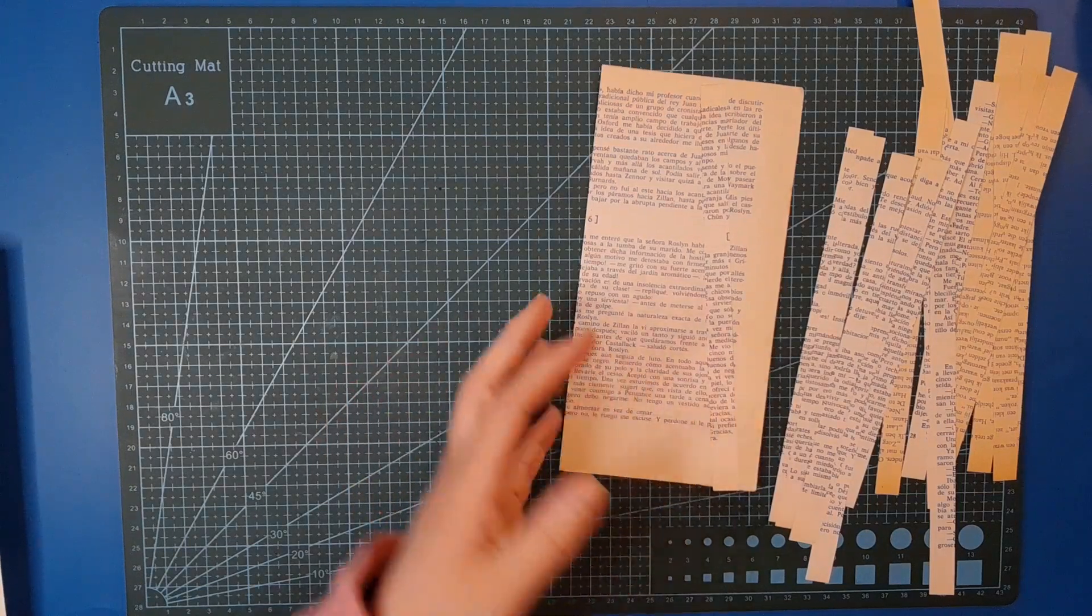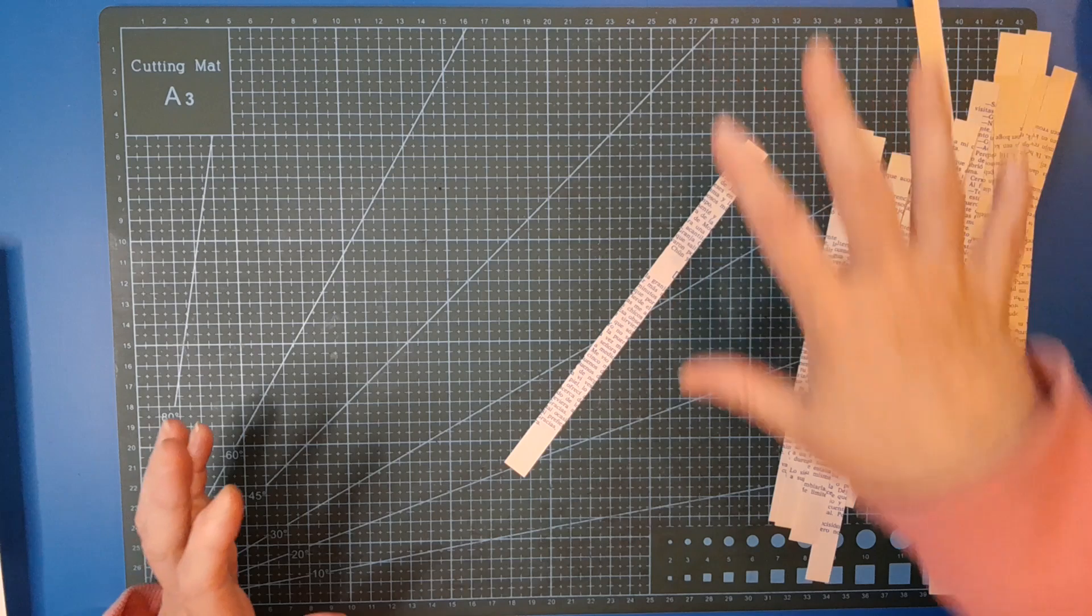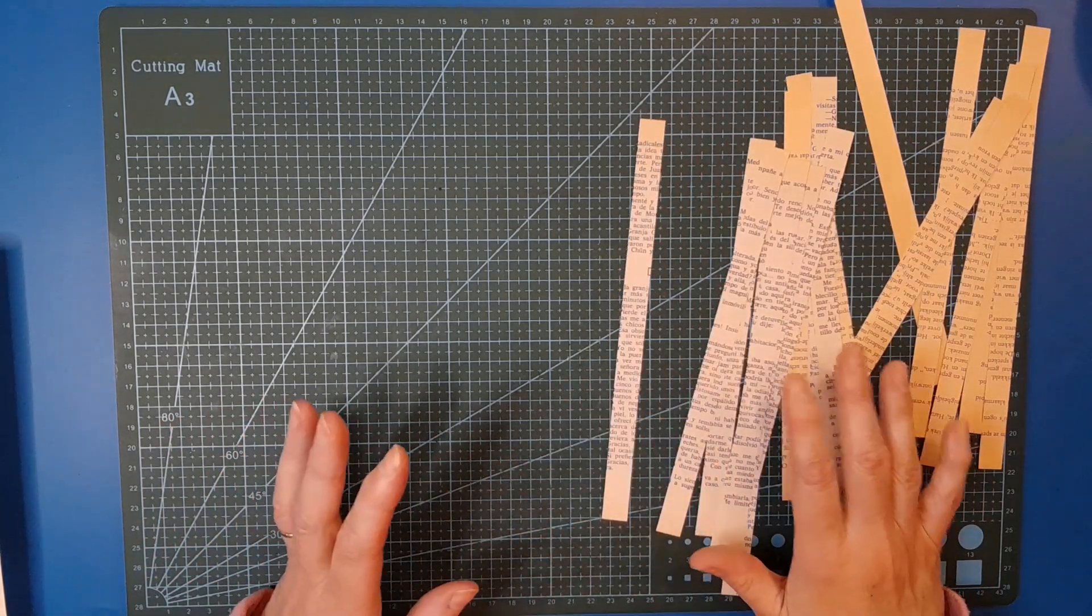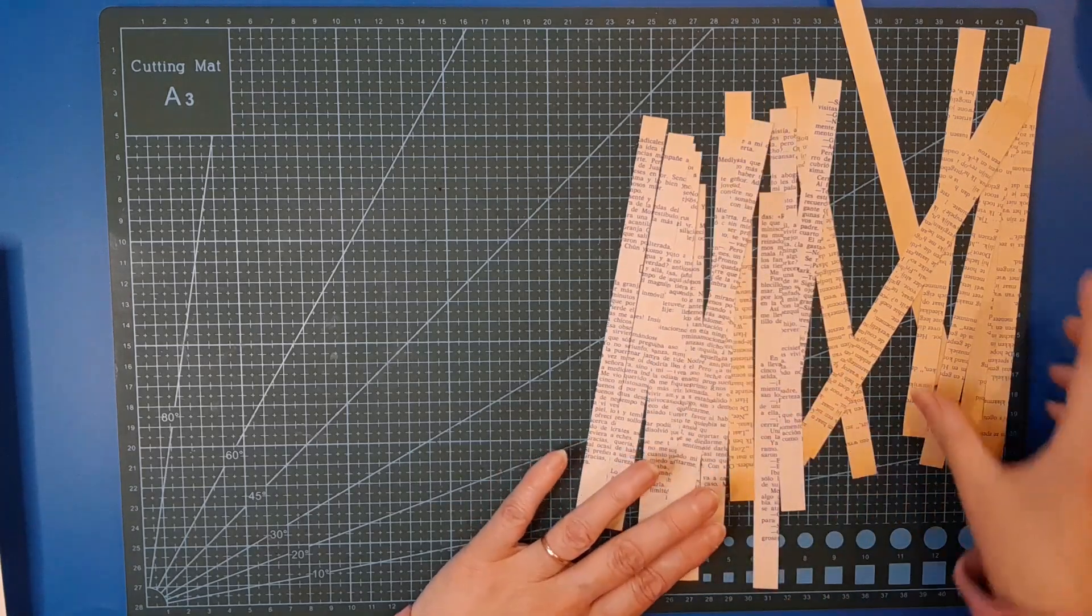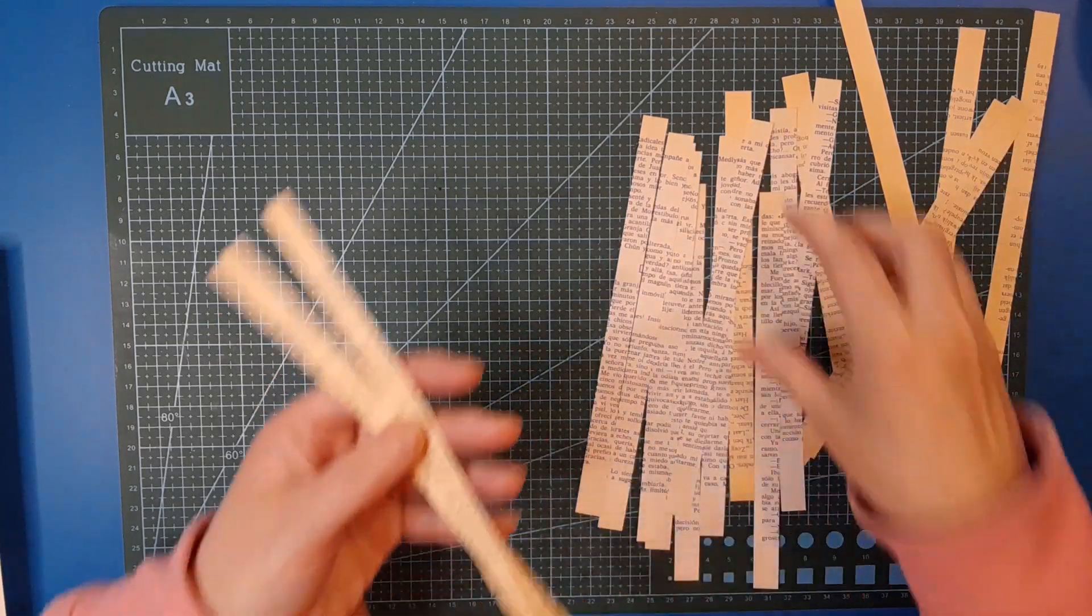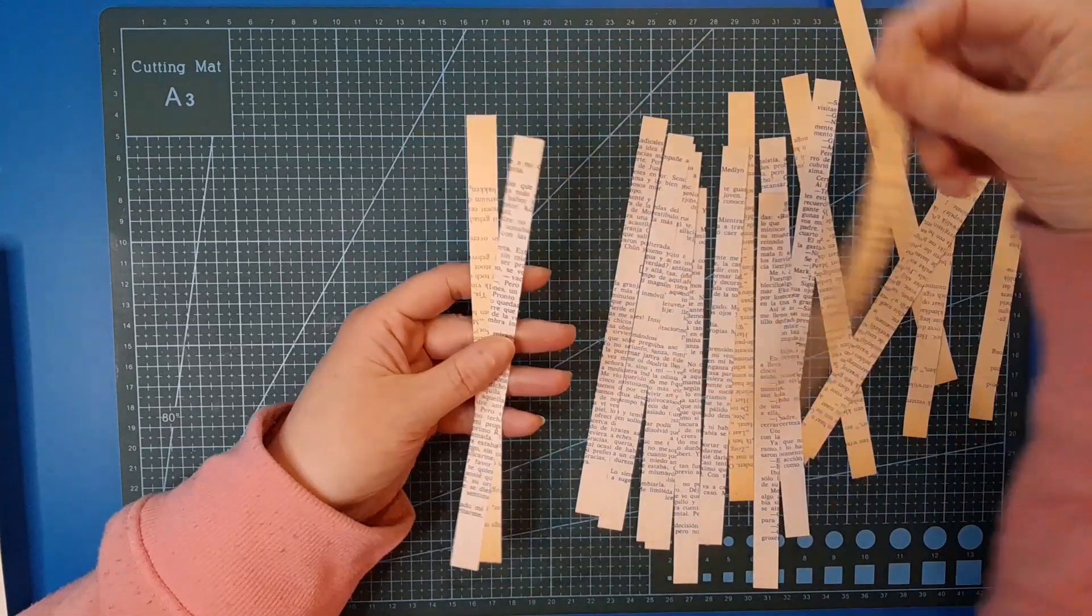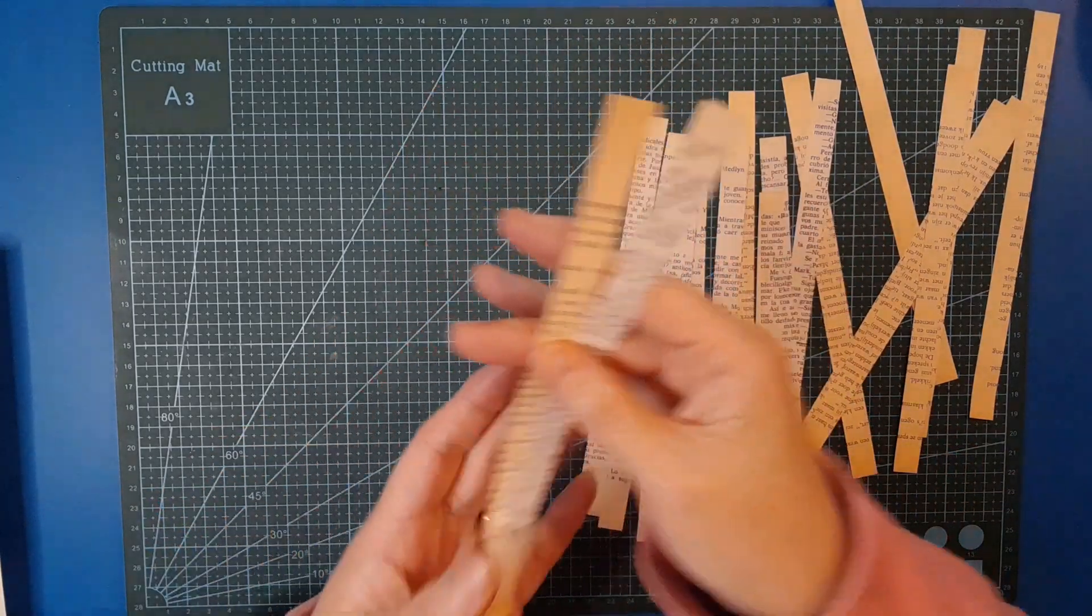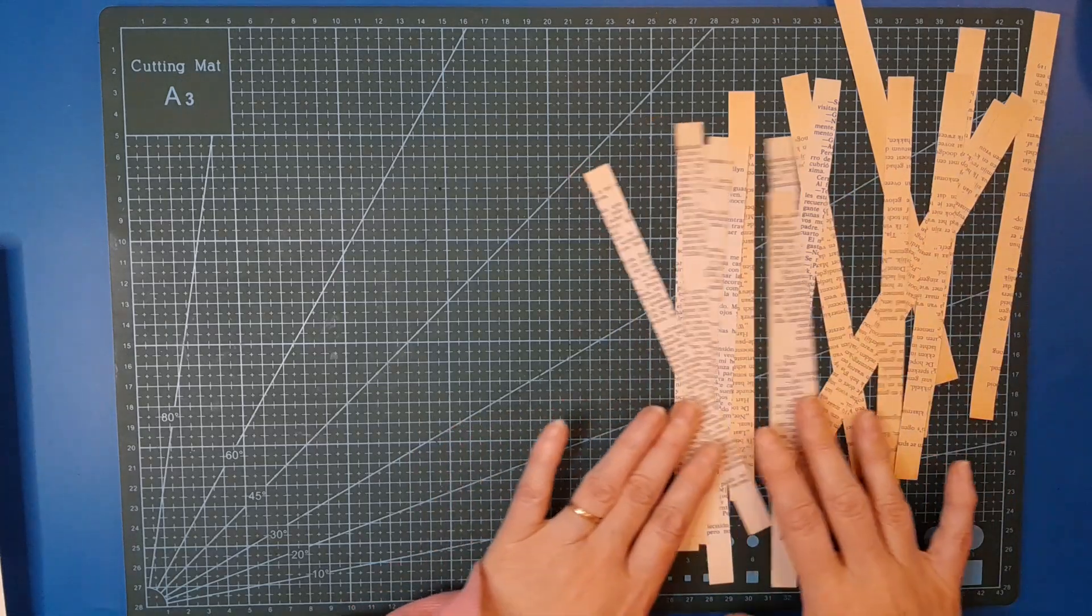That's how I cut my strips. Before I got my guillotine it was a lot more labor intensive and annoying and took so much longer. I've got here all my strips cut with two different colors of book page, and you can see the difference in those colors.